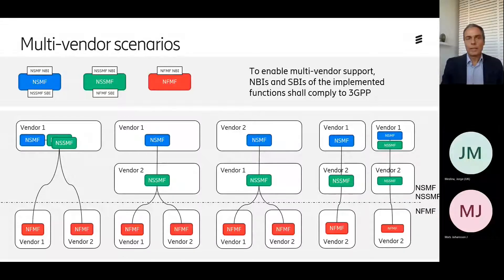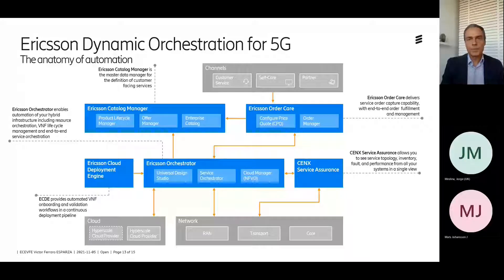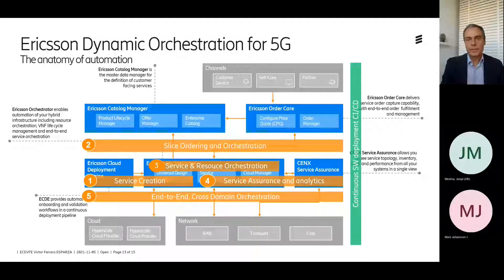We can have scenarios where orchestration is handled in multiple tiers and multiple layers, enabling multi-vendor solutions. Ericsson has a dynamic orchestration solution for 5G. These are the building blocks and products that compose the solution, and this enables the full automation and lifecycle management of network slices — including design, ordering, orchestration, and assurance.